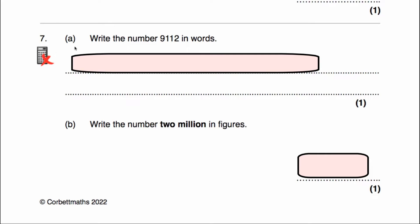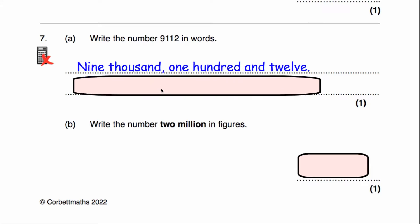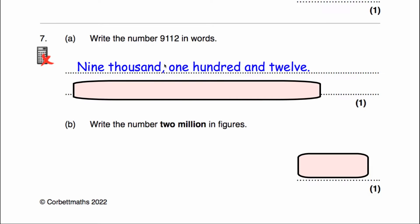Question 7A says to write the number 9,112 in words. That's 9,112 — one ten and two units, that's 12. So the answer would be nine thousand, one hundred and twelve.